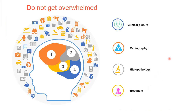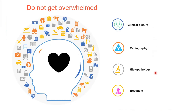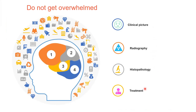Squamous odontogenic tumor is seen in the anterior teeth; maxilla is more commonly affected. Radiographically, radiolucency along the root surface can be confused with vertical bone loss from periodontitis. Histopathologically, islands of squamous epithelial cells with a flattened periphery are seen in a connective tissue stroma. Treatment is conservative, but the potential complication is development of intraosseous squamous cell carcinoma.